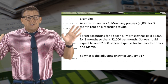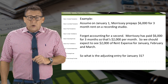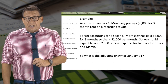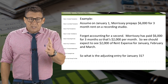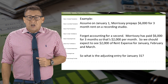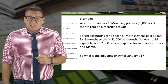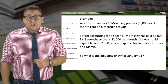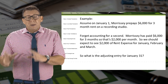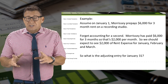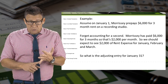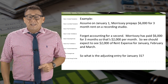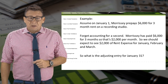Forget accounting for a second — we know that those balances aren't correct. Morrissey paid $6,000 for three months, so that would be $2,000 a month. So we should expect to see $2,000 of rent expense for January, February, and March. This is why we need to adjust these accounts.